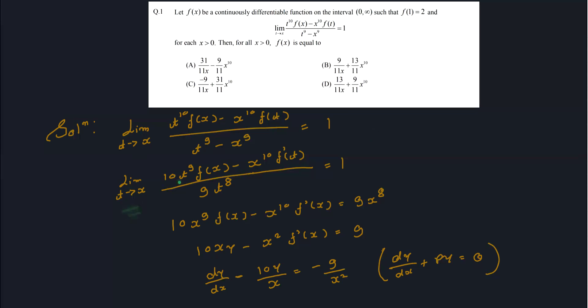Differentiating with respect to t, we get: [10t^9 · f(x) − x^10 · f'(t)] / [9t^8]. Plugging in t = x and cancelling x^8, the expression simplifies to: 10x · f(x) − x^2 · f'(x) = 9.